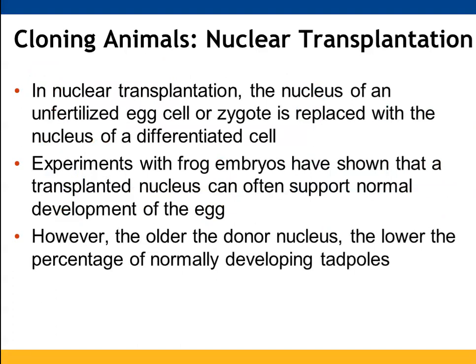With animals, cloning is more complicated. It uses nuclear transplantation — taking the nucleus out of an unfertilized egg cell or zygote and replacing it with a donor nucleus. Experiments with frog embryos showed that transplanting a nucleus can often support the development of that egg, but if the donor nucleus is older and more differentiated, a lower percentage of tadpoles develop normally. The newer the donor nucleus, the greater the success rate.